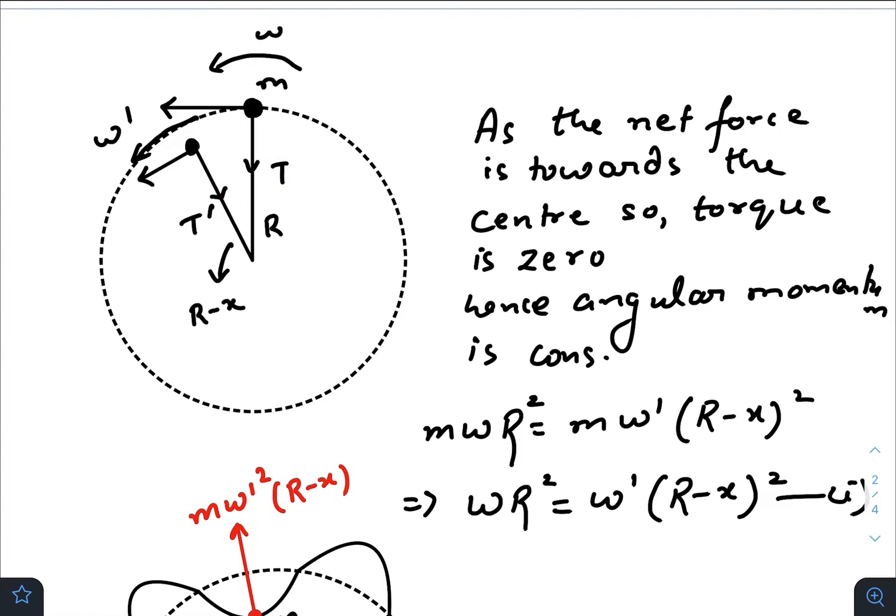This tension, it doesn't matter if it's increasing or decreasing, applies zero torque because the force passes through the center. So as there is no torque with respect to this center, angular momentum will be conserved.